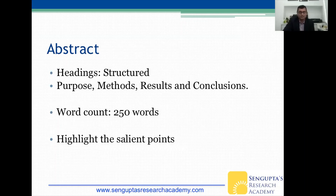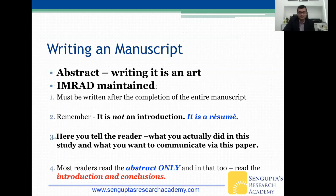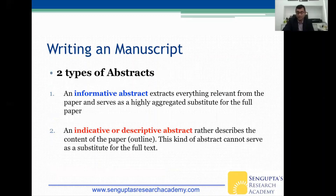Abstract writing is extremely important. It must be a structured abstract — the typical outline is purpose, methods, results, and conclusions — with a word count of around 250 words. The abstract must highlight salient points; writing it is really an art. IMRAD must be maintained, and it should be written after the conclusion of the entire manuscript — at the very end. Remember: it is not an introduction, it is a résumé. There are two types of abstract: the informative abstract, which extracts everything relevant and serves as a highly aggregated substitute for the full paper, and the descriptive abstract, which merely describes the content — the latter should be avoided.